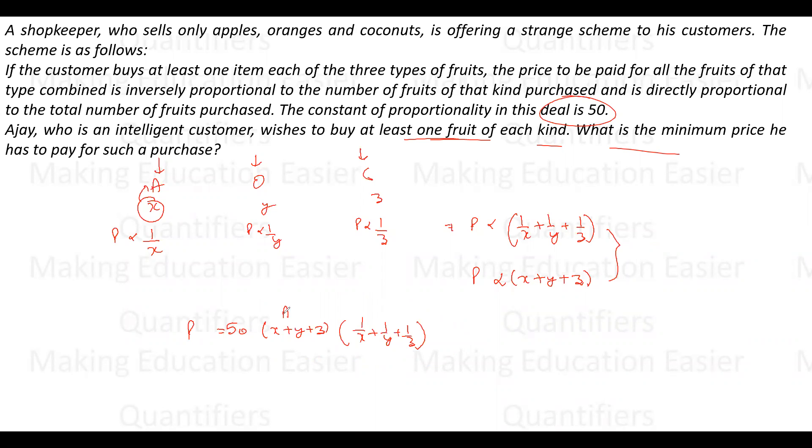I can use the AM-HM rule: arithmetic mean is always greater than or equal to harmonic mean. If I apply this, (x + y + z)/3 ≥ 3/(1/x + 1/y + 1/z). Therefore, (x + y + z) × (1/x + 1/y + 1/z) ≥ 3 × 3 = 9. So the minimum value this can hold is 9.